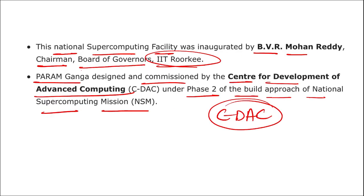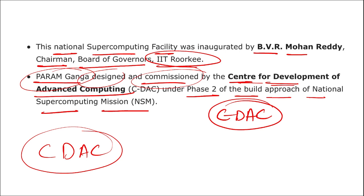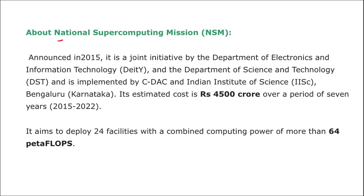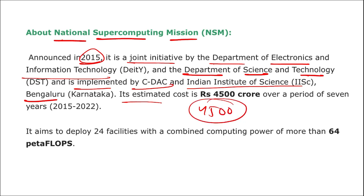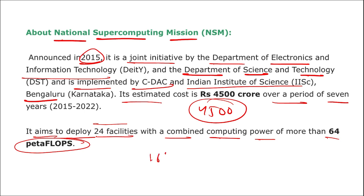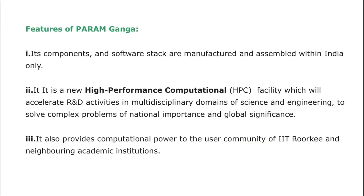The National Supercomputing Mission was announced in 2015. It is a joint initiative by the Department of Electronics and Information Technology and the Department of Science and Technology, and is implemented by CDAC and the Indian Institute of Science in Bangalore. The estimated cost is about 4,500 crore rupees over seven years. It aims to deploy 24 facilities with a combined computing power of more than 64 petaflops.